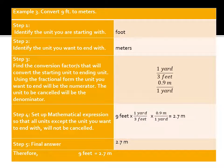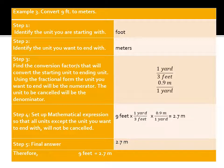Convert 9 feet to meters. Step 1: the starting unit is feet. Step 2: the ending unit is meters. Step 3: find the conversion factors — in every 1 yard there are 3 feet, and in every 1 yard there are 0.9 meters. Step 4: set up the expression — 9 feet × (1 yard / 3 feet) × (0.9 meters / 1 yard). Cancel out feet and yard. Remember that a whole number has a constant denominator of 1, so 9 × 1 × 0.9 ÷ 3 = 2.7 meters. Therefore, 9 feet equals 2.7 meters.